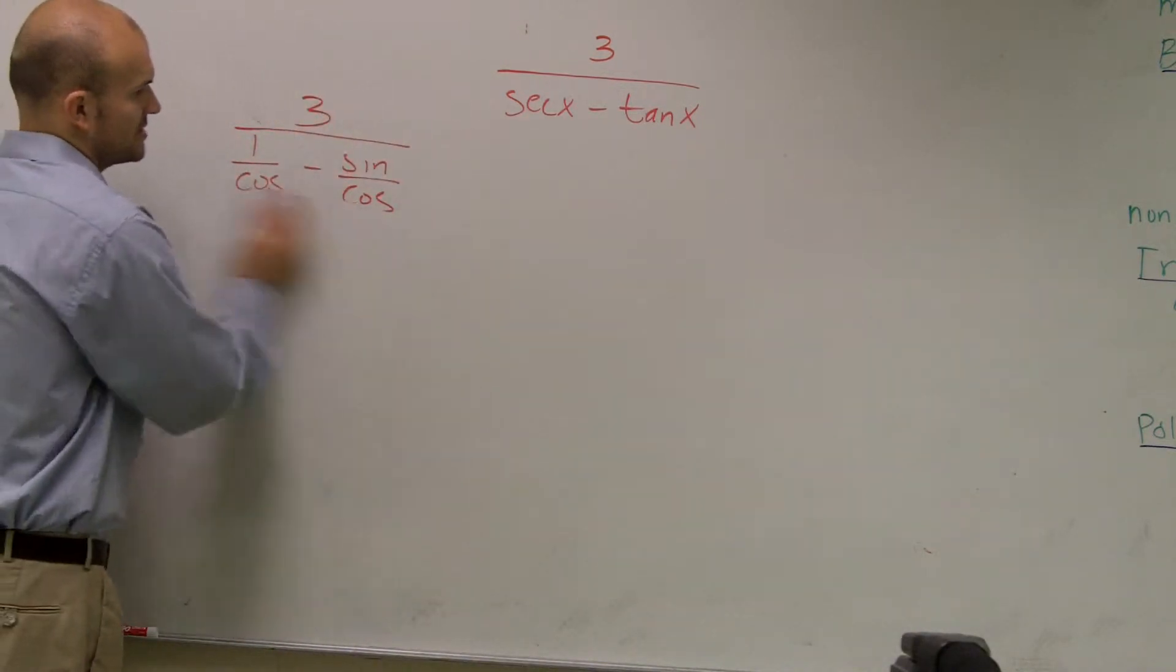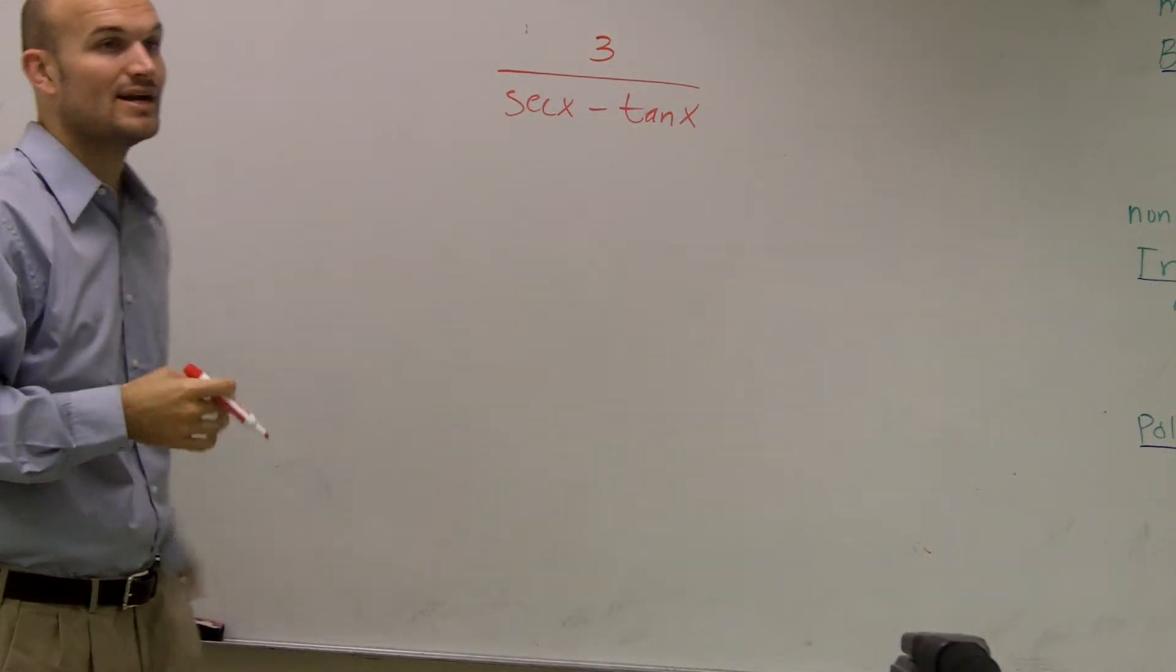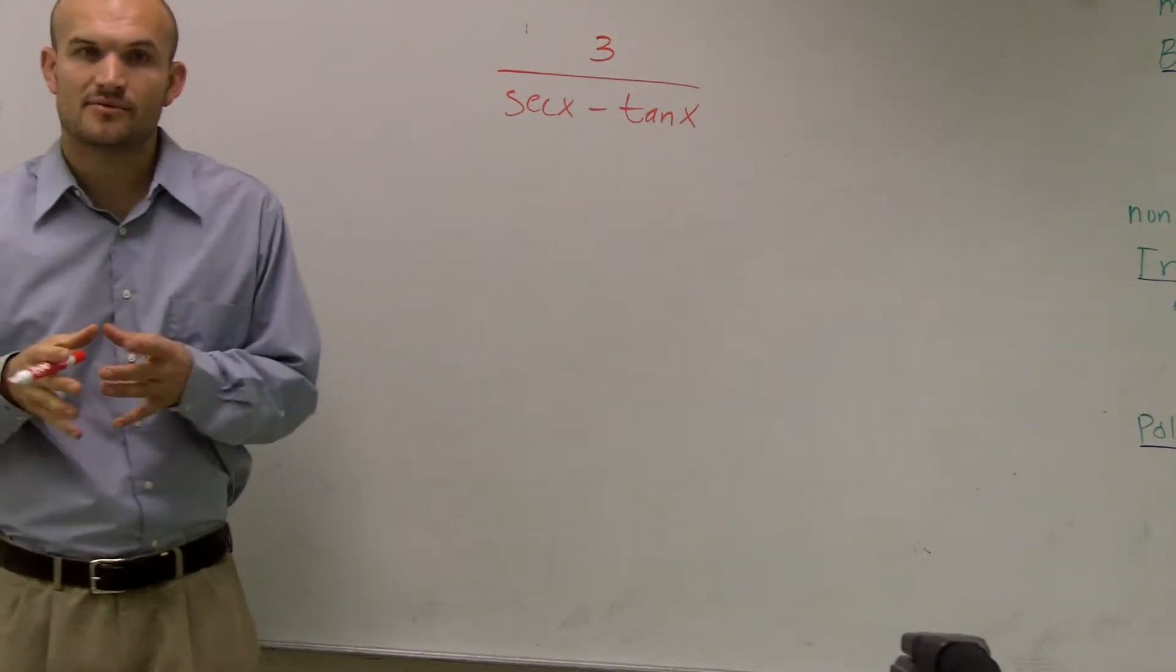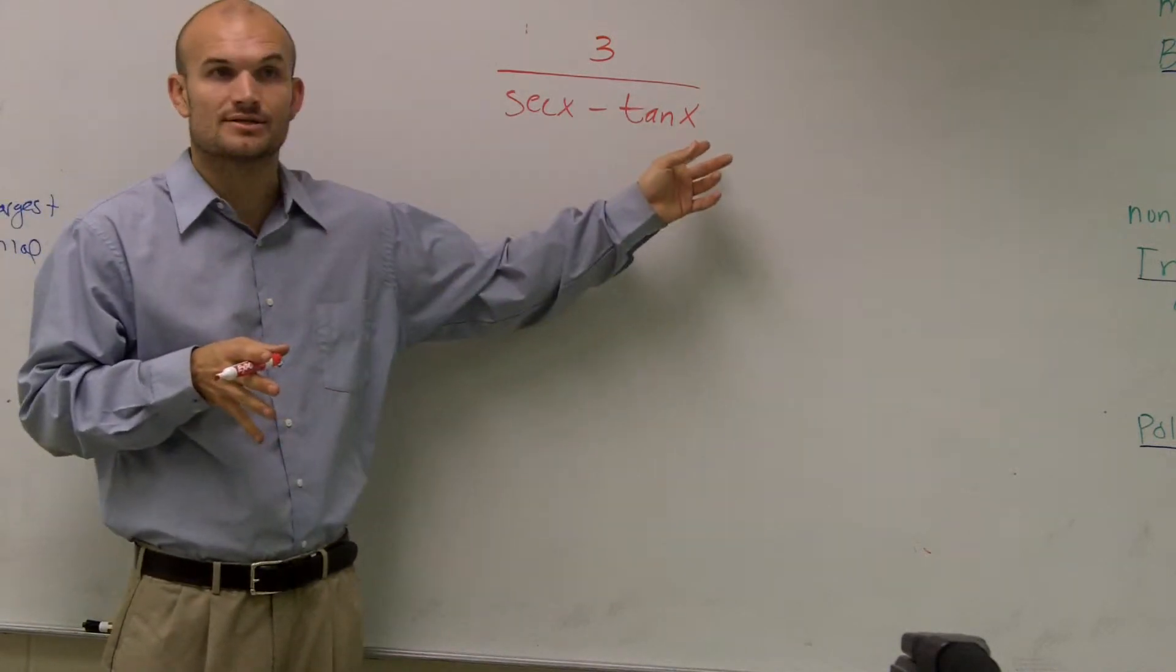One thing I'd like you to look into, this is something to look for. Remember, Pythagorean identities help us convert between secant and tangent. We know that the Pythagorean identity has secant and tangent.